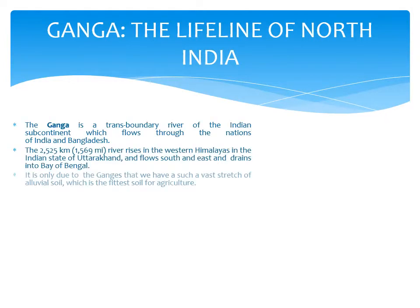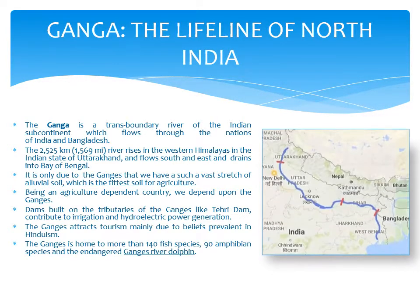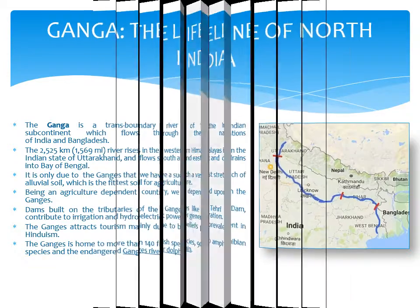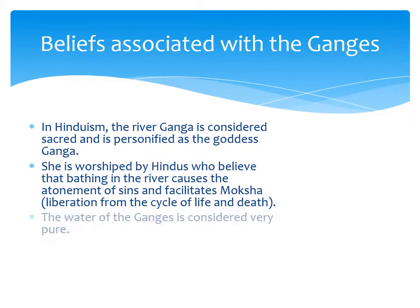Why are we talking about Ganga pollution? Ganga is the lifeline of North India. The Ganga is the transboundary river of the Indian subcontinent which flows through the nations of India and Bangladesh. It is only due to the Ganga that we have such a vast stretch of alluvial soil, which is the fittest soil for agriculture. Being an agriculture-dependent country, we totally depend upon the Ganga. The Ganga attracts tourism mainly due to the beliefs prevalent in Hinduism. The Ganga is home to more than 145 fish species, 90 amphibian species, and the endangered Ganges dolphin.